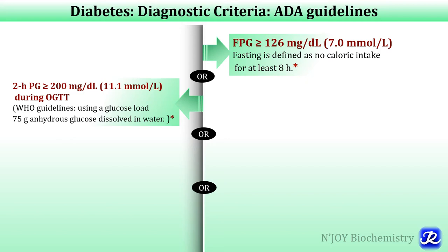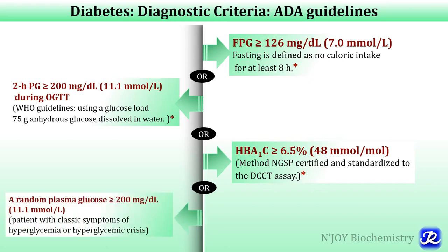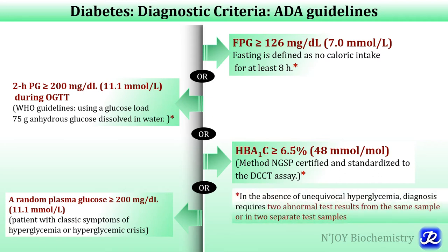The HbA1c criterion is glycated hemoglobin more than or equal to 6.5 percent, and this test should be performed using a method certified by the National Glycohemoglobin Standardization Program (NGSP) and traceable to the DCCT reference assay. The fourth criterion is a random plasma glucose more than or equal to 200 milligram per deciliter in a patient with classic symptoms of hyperglycemia. In the absence of unequivocal hyperglycemia, diagnosis requires two abnormal test results from the same sample or in two separate test samples, and all tests except random blood glucose need to be repeated and confirmed on a separate day.